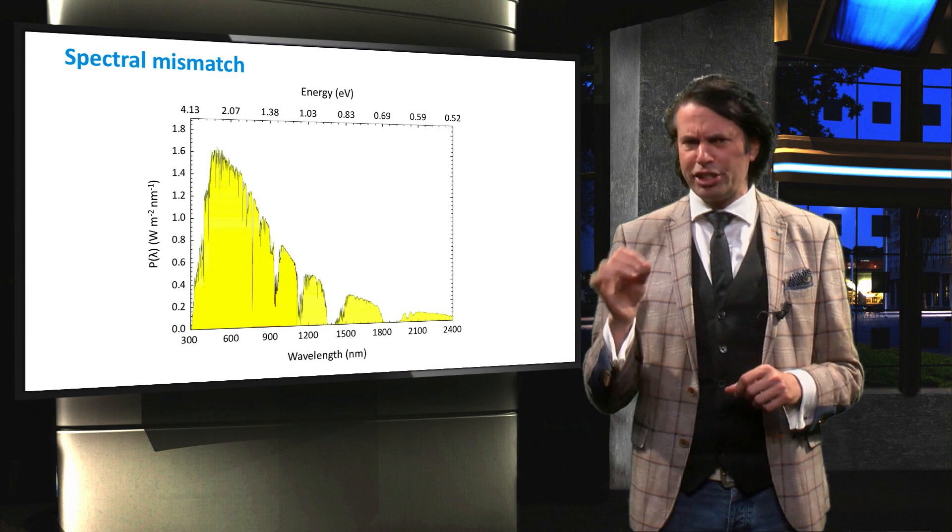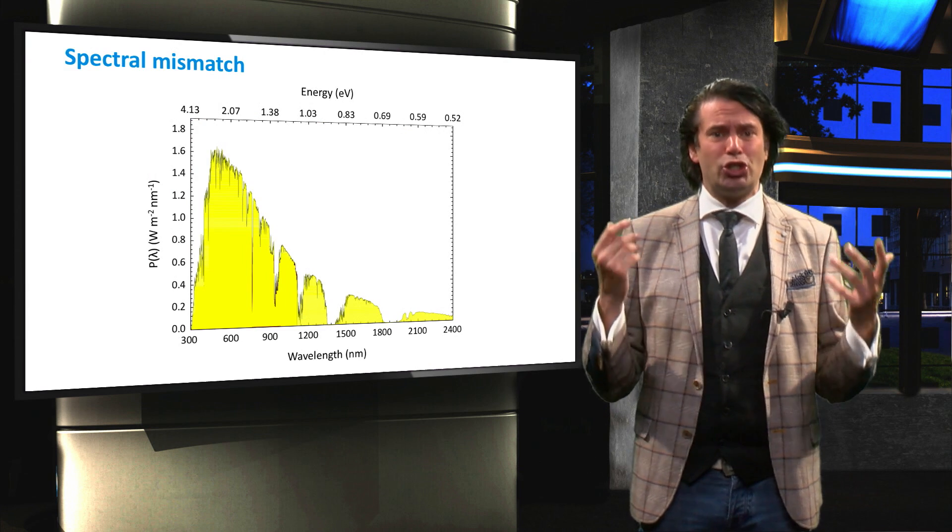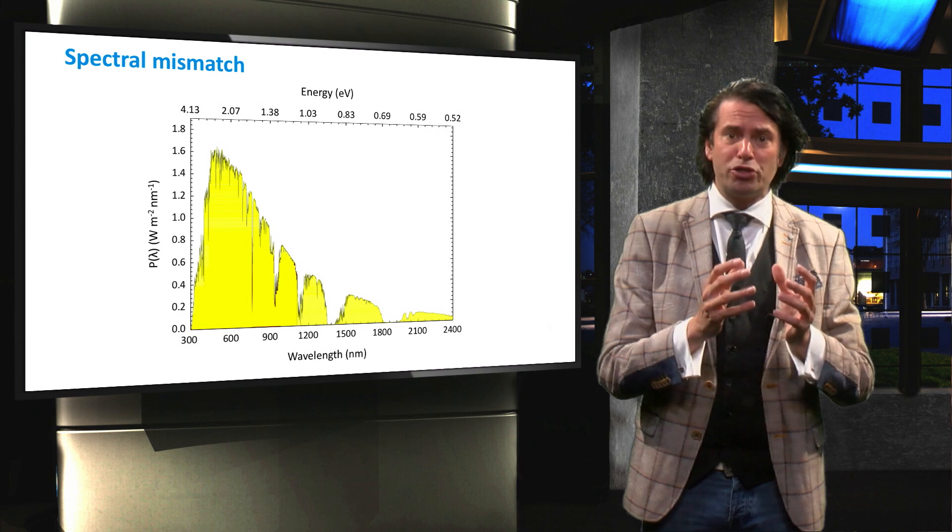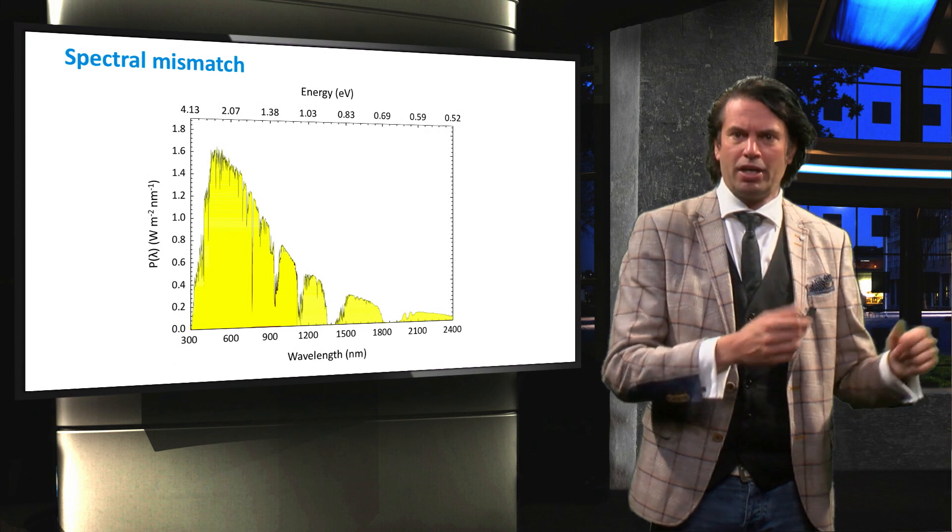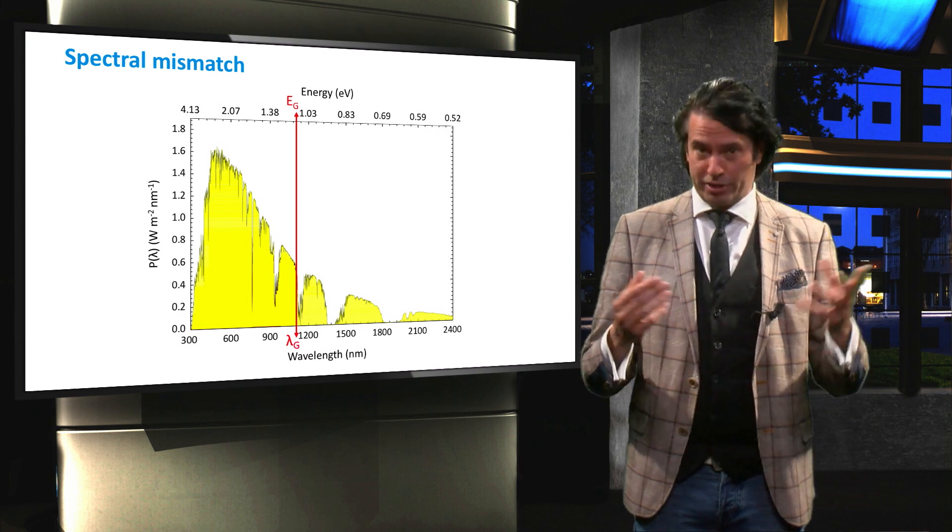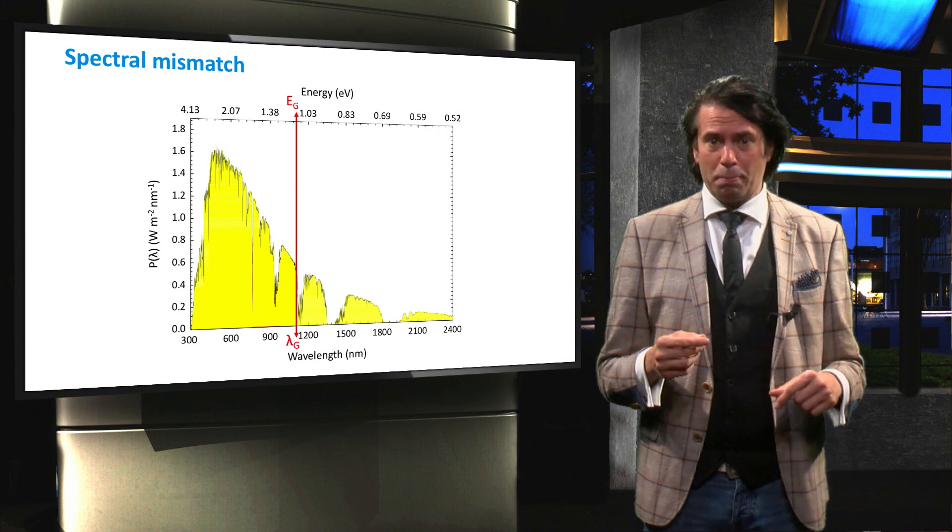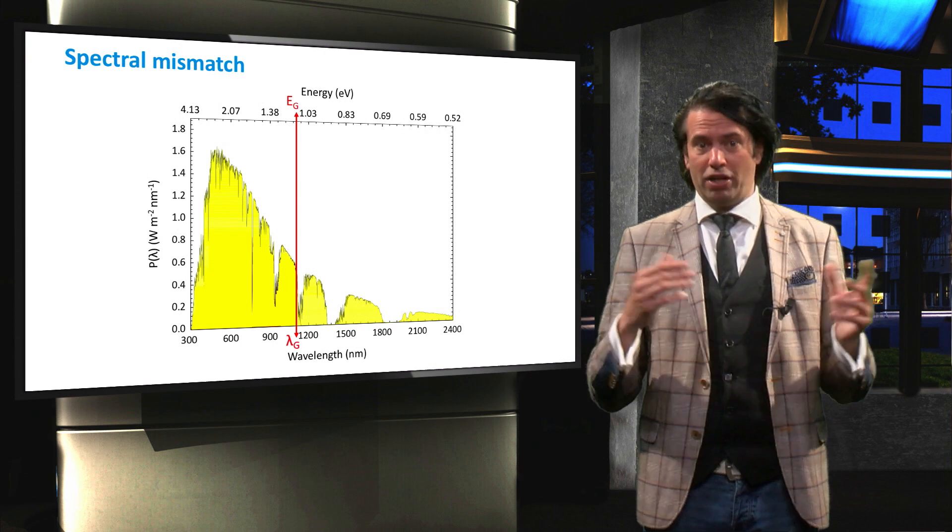Spectral mismatch considers the notion that any single junction solar cell can only use a fraction of the available spectrum. If we consider for instance a crystalline silicon solar cell, with a bandgap energy of 1.12 eV, which corresponds to a wavelength of about 1100 nm.